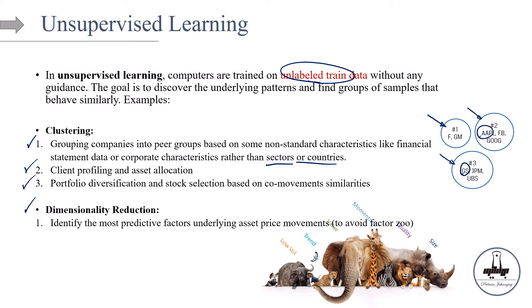And we know that necessarily not all of those thousands are useful or maybe many of them are very highly correlated. So how can we reduce the dimensionality of the data? So this is another technique that we use. We call it dimensionality reduction. And it's a type of unsupervised learning. So an example is we want to identify the most predictive factors underlying asset price movements. So this is basically to avoid what we call factor zoo in factor modeling asset pricing.